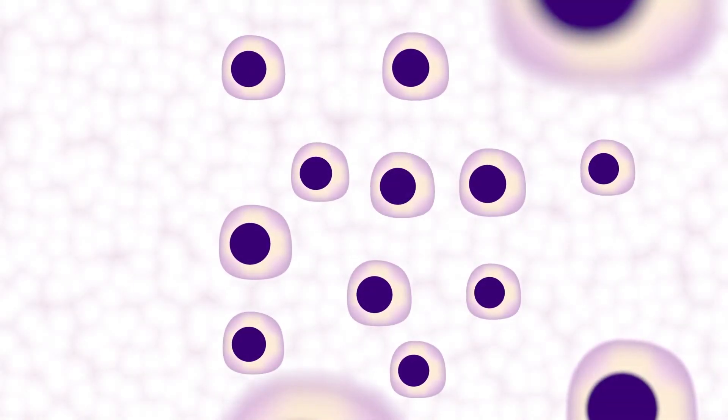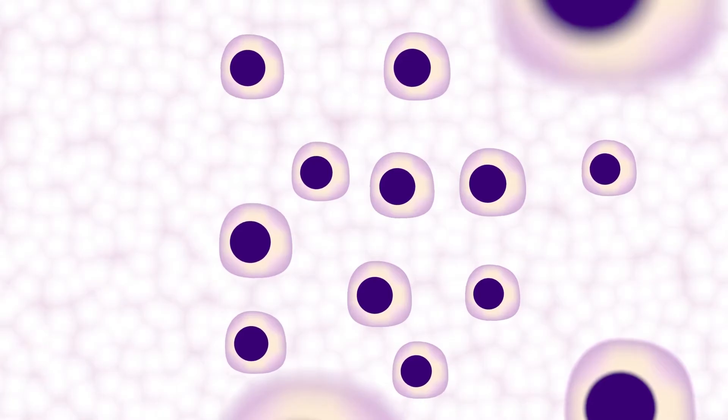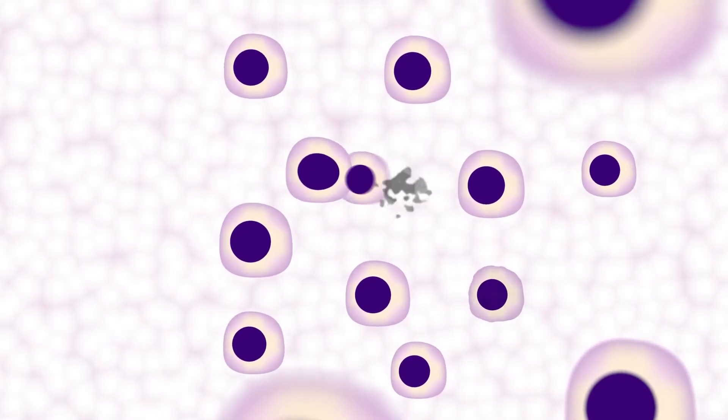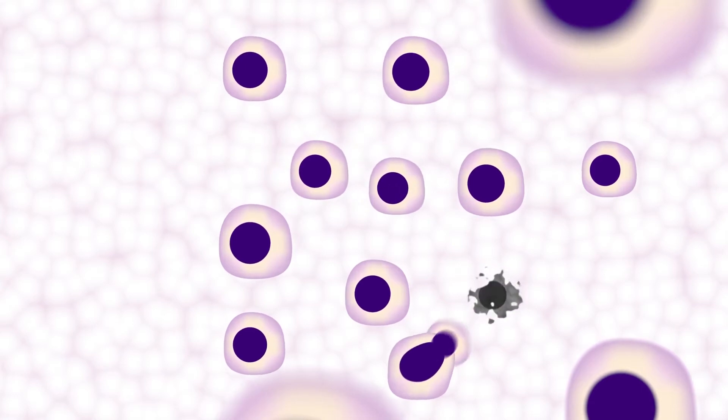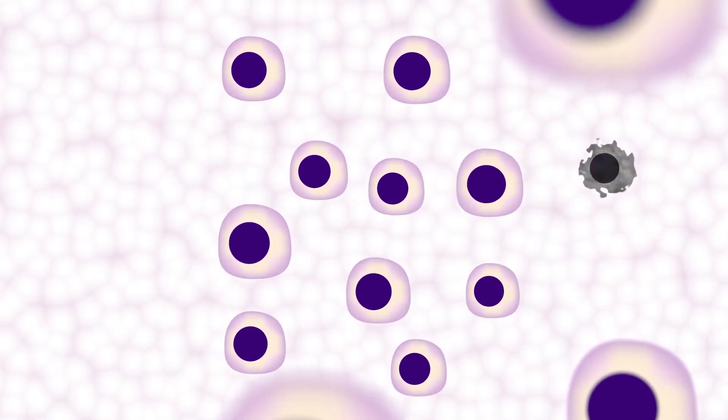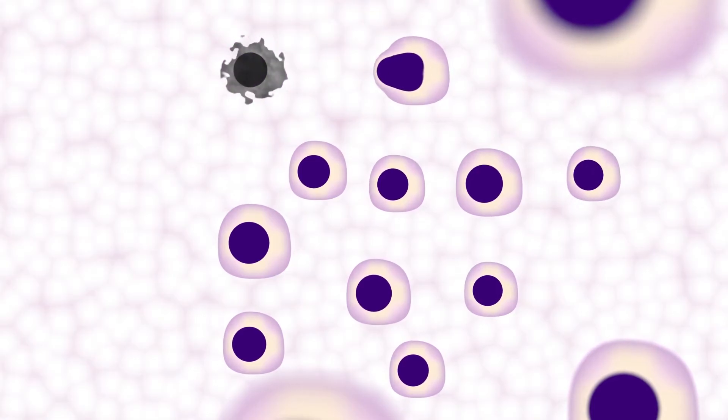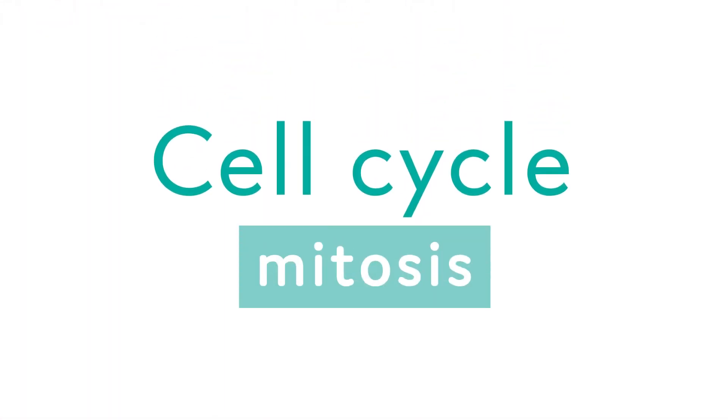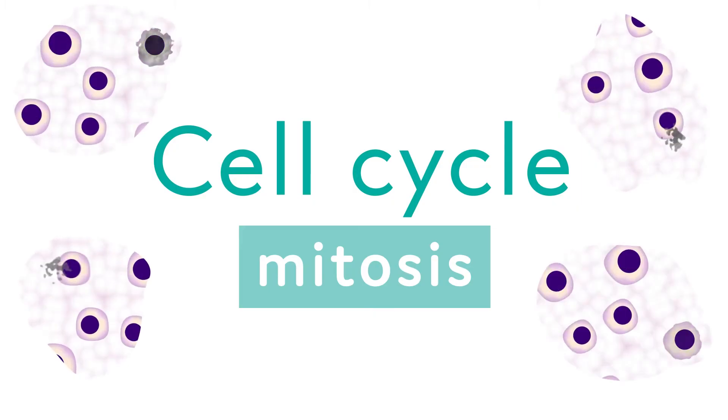Nearly all the cells that make up our bodies have a limited lifespan. They eventually die off naturally. This means that they need to be replaced by new cells. New cells form when an old cell divides into two new cells. This process is called the cell cycle, or mitosis, and is happening to lots of cells in our bodies all the time.